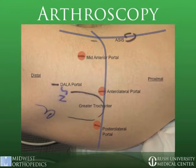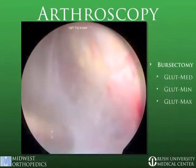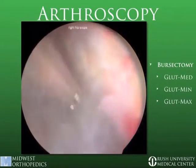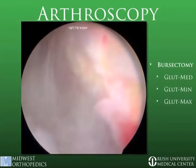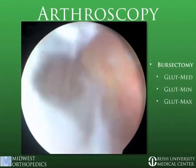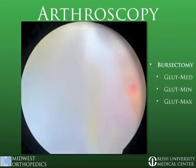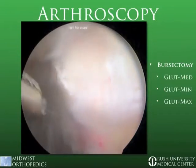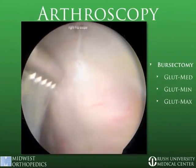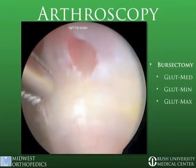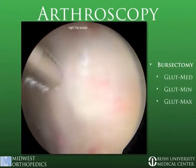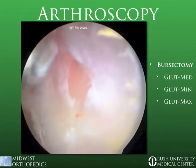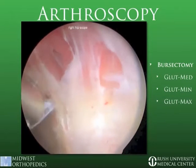Before the portals were created, the peritrochanteric space was insufflated using normal saline. Having entered the space through the anterior lateral portal, the trochanteric bursa is first encountered and removed using a large shaver. During this portion, the surgeon should identify normal anatomy including the gluteus medius and minimus, the gluteus maximus, the vastus ridge, and the vastus lateralis.